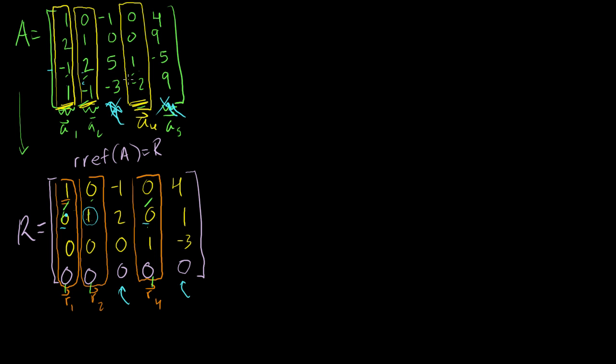And since they form the basis, if you want to know the dimension of the column space — which is also called the rank — you just count them. There are three, so it has a rank of three.